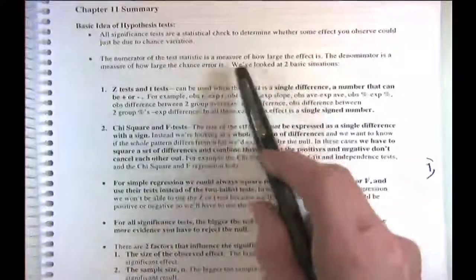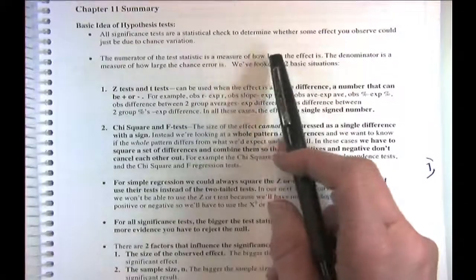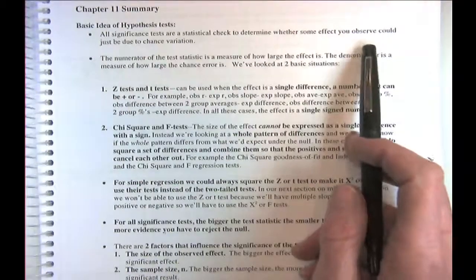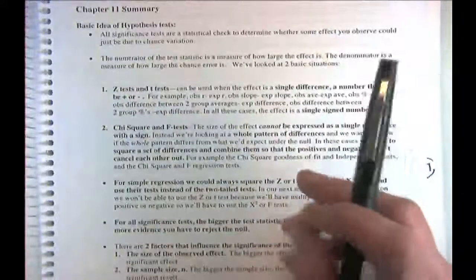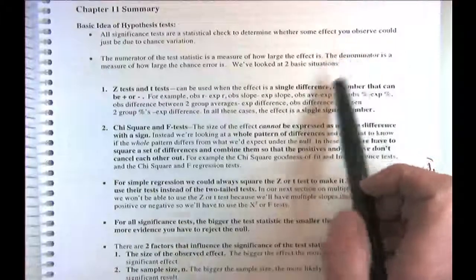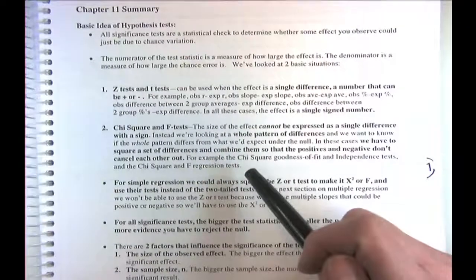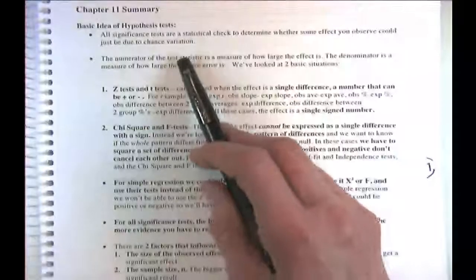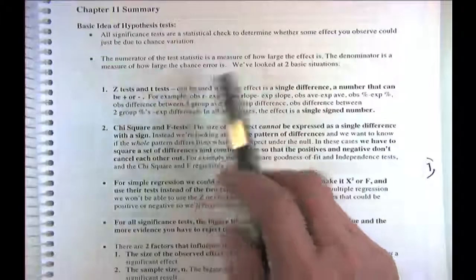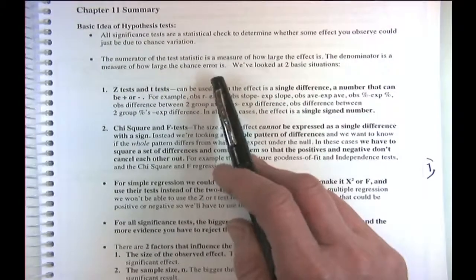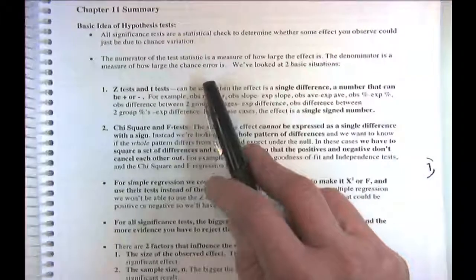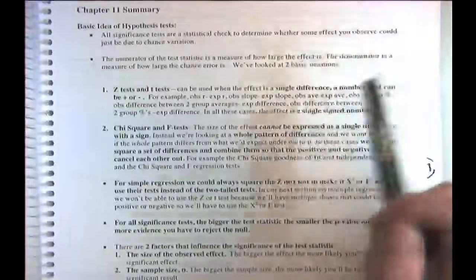The basic idea of hypothesis tests or significance tests is that they're the statistical check to see whether some effect you observe — some difference between what you observe and what you'd expect under the null — is due to a particular cause or just due to chance variation. The numerator of the test statistic is always a measure of how large the effect is, and the denominator is a measure of how large the chance error is.